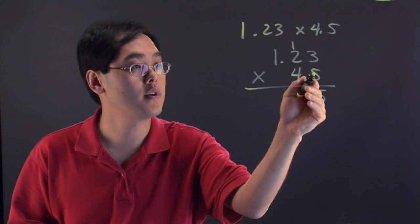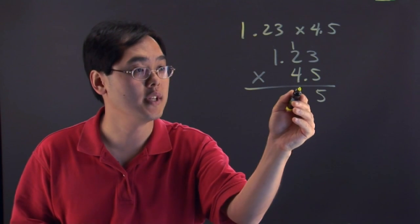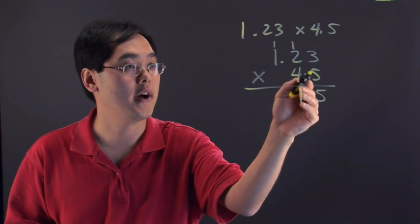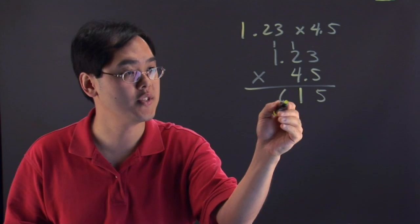Carry the 1 over. 5 times 2 is 10. Add the 1, it's 11. So you write the 1 but you carry the 1 on top. 5 times 1 is 5. Add the 1 gives you 6.